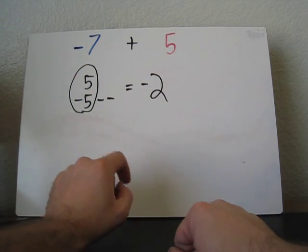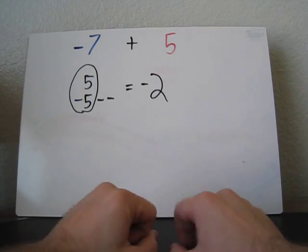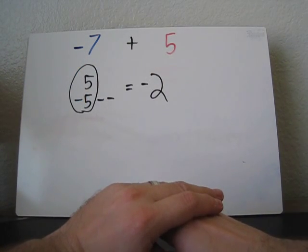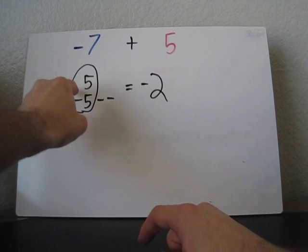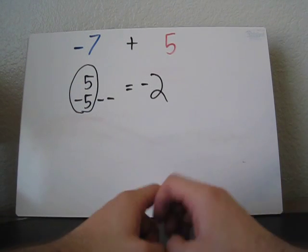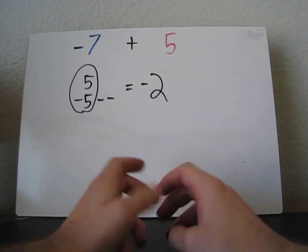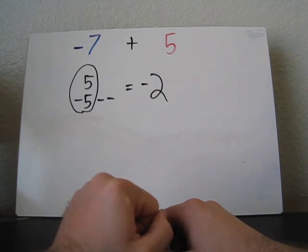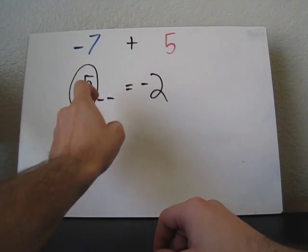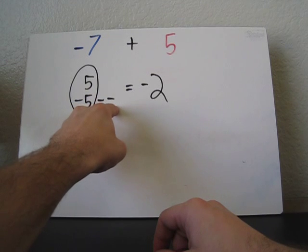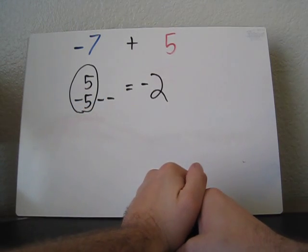So the 0 pairs match up, and they create a 0. 5 minus 5 is 0. 2 minus 2 is 0. And so when we get back to here, we see that there's 2 negatives, so the answer is going to be negative 2.